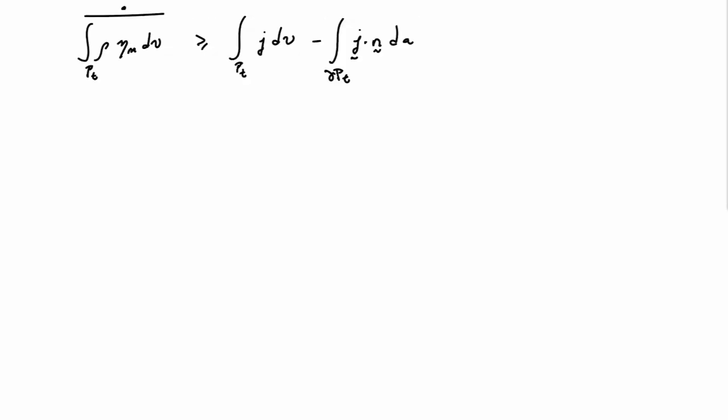Let me go ahead and rewrite the global statement here using the integral expressions. The integral of ρηm, the time rate of change, is greater or equal to the integral of j—the volumetric supply—minus the entropy flux coming out of the part of the body that we're examining.